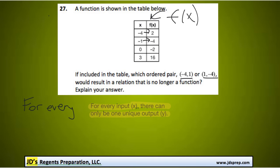So if we were to add negative 4 and 1, or 1 and negative 4, you can see that because we already have an input of negative 4, that gives us an output of 2.